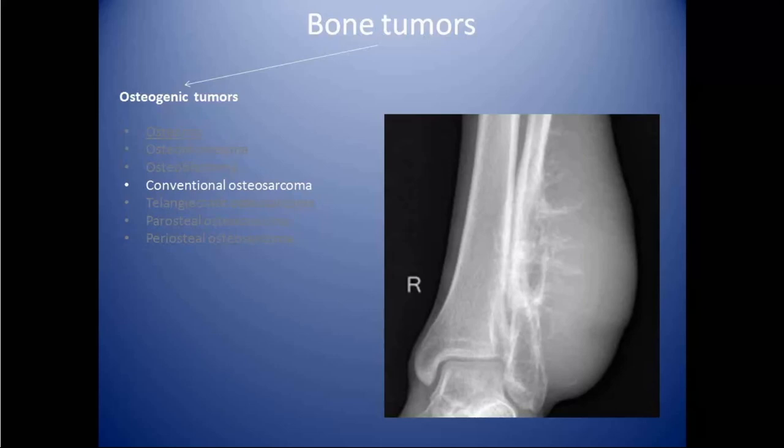Conventional osteosarcoma can be purely lytic, but more commonly it is a combination of lytic and sclerotic areas. It can metastasize to the lung with poor prognosis. It can lead to cannonball metastases in the lung, and the patient can present with spontaneous pneumothorax.